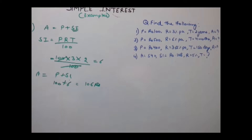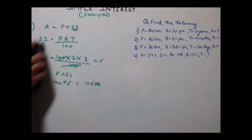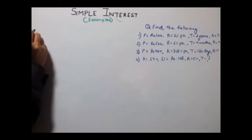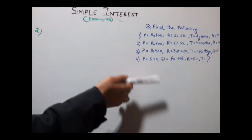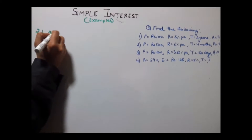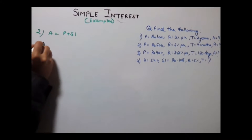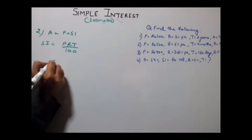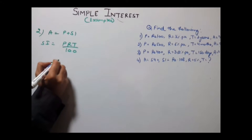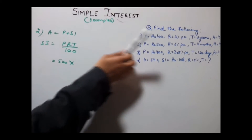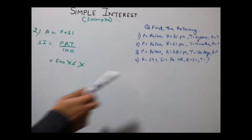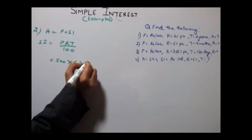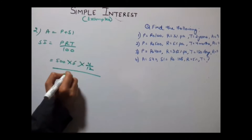Now let's do another example. The second part is the same — the values of P, R, and T are given and we need to calculate the amount. Amount equals principal plus simple interest, and simple interest equals PRT divided by 100. Here P is 500, R is 6% per annum, and the time is given in months, so we need to convert this into years by dividing the months by 12.